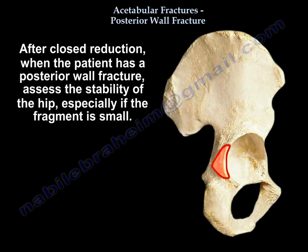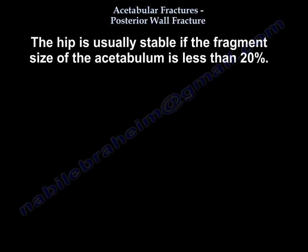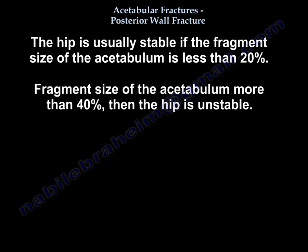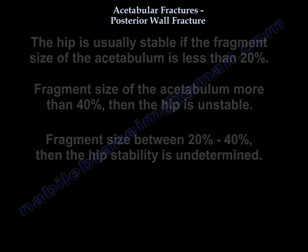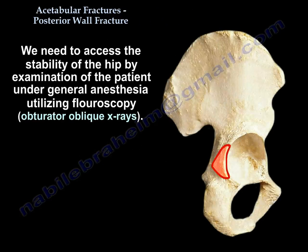After closed reduction, when the patient has a posterior wall fracture, assess the stability of the hip, especially if the fragment is small. The hip is usually stable if the fragment size of the acetabulum is less than 20%. More than 40%, the hip is unstable. Between 20 to 40% fragment size, hip stability is undetermined, so we need to assess stability by examination under general anesthesia utilizing fluoroscopy.